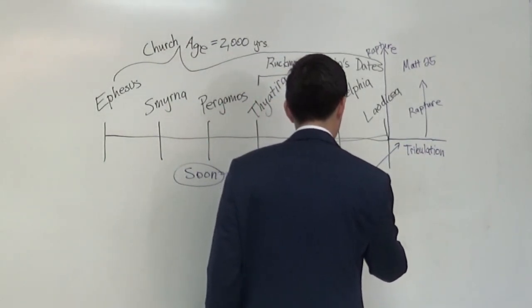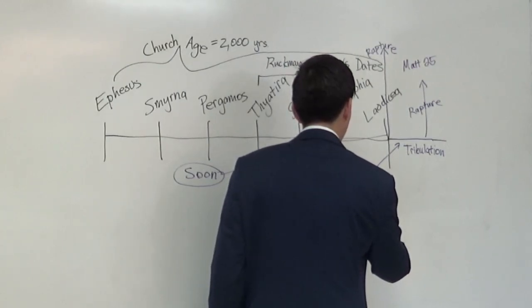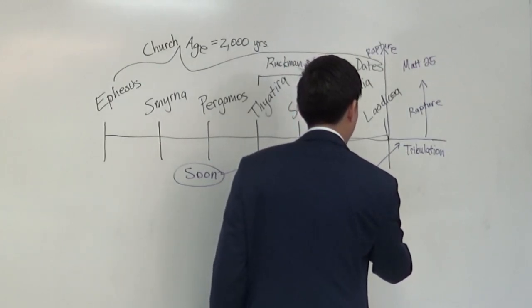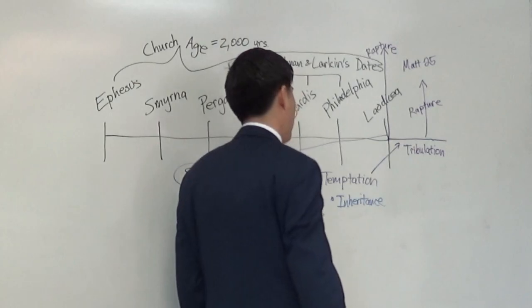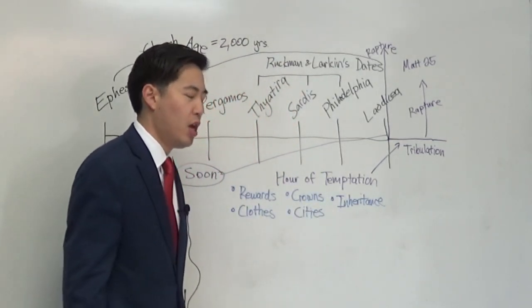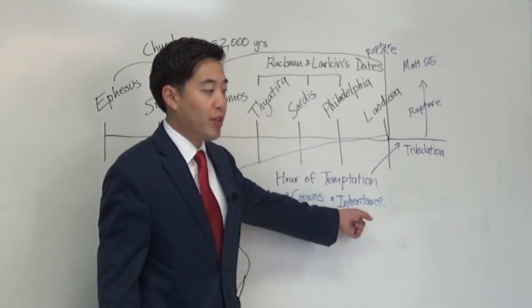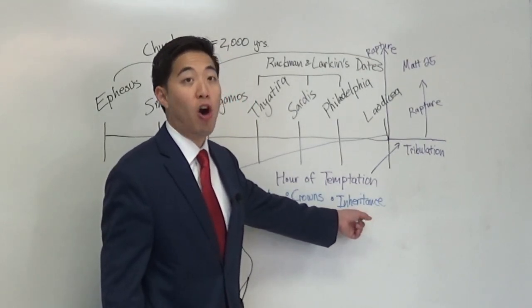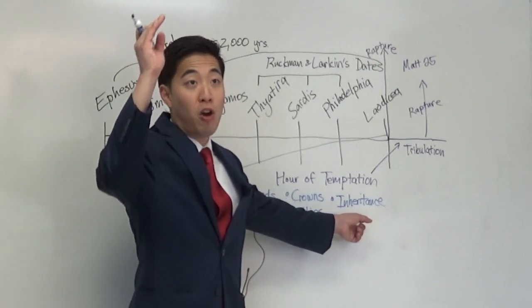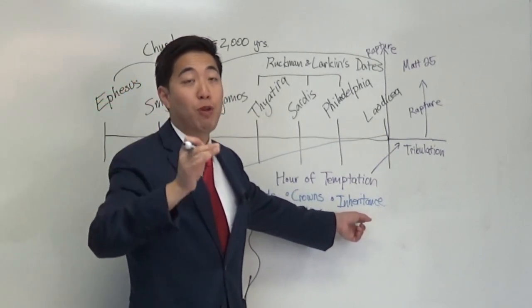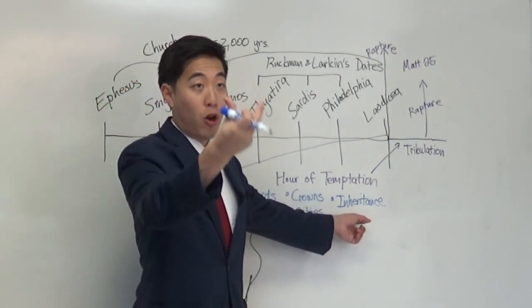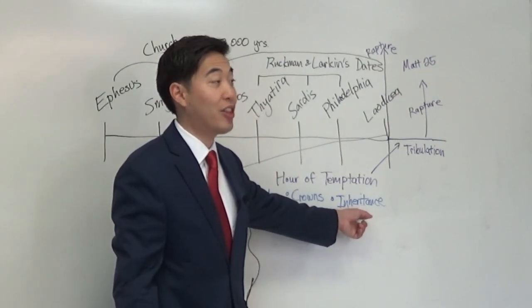Inheritance would be proven at Revelation chapter 21 as well as 1 Corinthians chapter 3. The Bible says that you will inherit all things, Revelation 21. 1 Corinthians chapter 3 mentions what all things are. Whether they be of earth, heaven, past, present, future, all are yours. So that's literally everything in the universe.